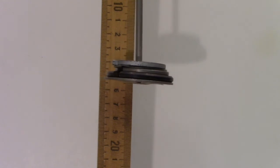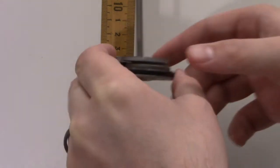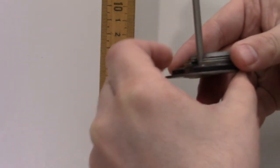A hundred puts us at 15 and a half centimeters. Two hundred puts us just under 31 centimeters. So we're getting perfectly consistent proportional readings.